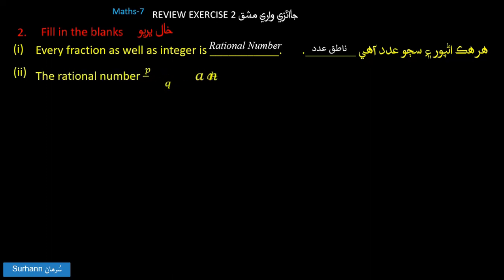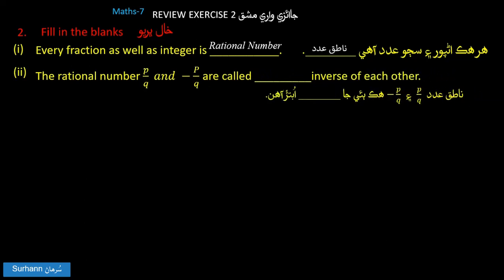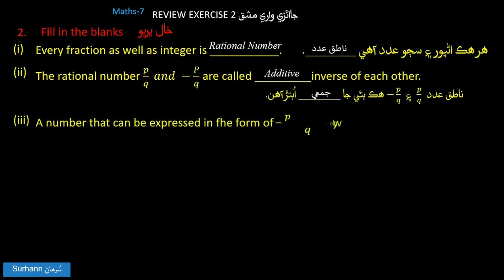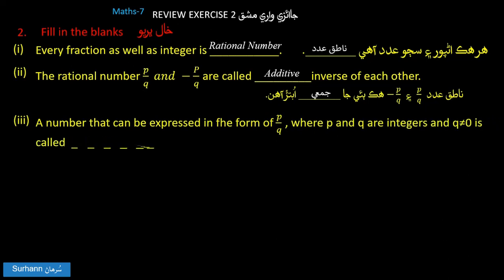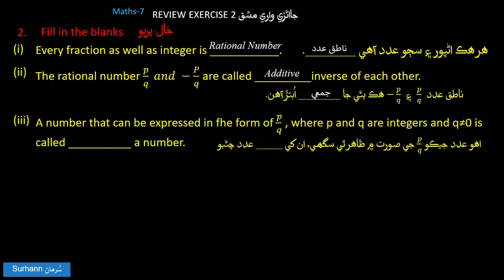Two numbers P upon Q and minus P upon Q are called additive inverses of each other. A rational number P upon Q, where P and Q are integers and Q is not equal to zero, is called a rational number.